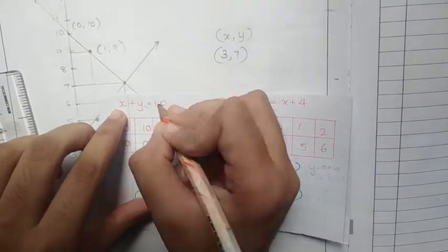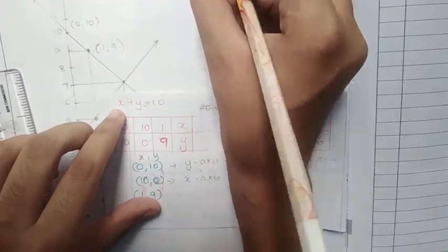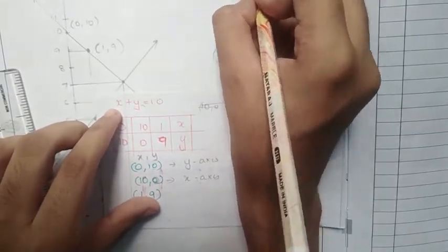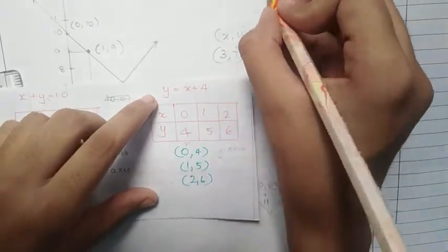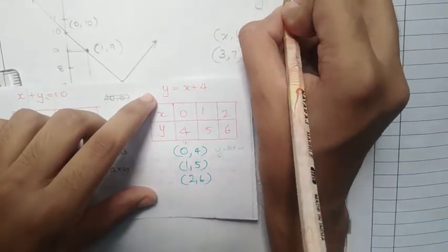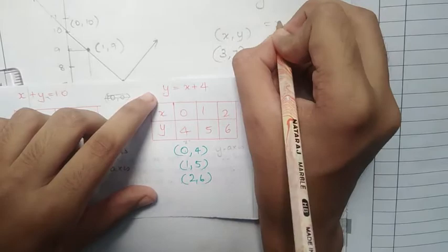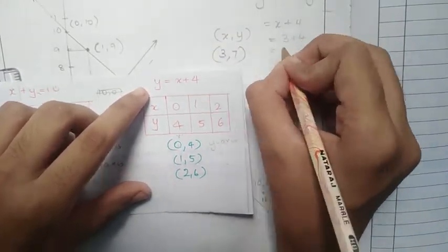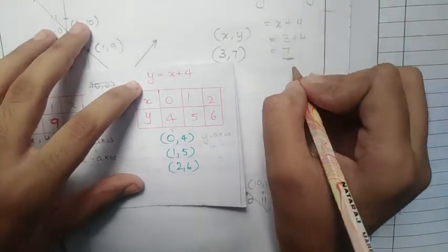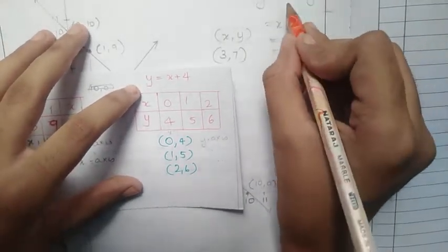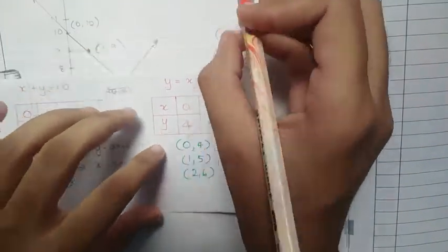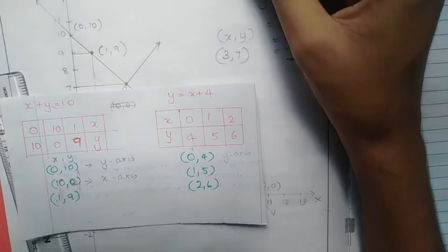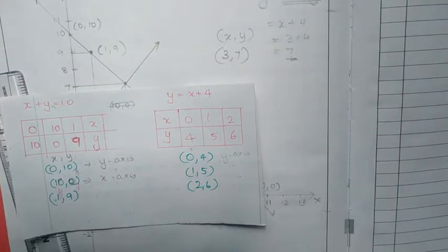Verification: total number of students is 10, so substitute: 3 plus 7 equals 10. Correct. And y equals x plus 4: 3 plus 4 equals 7, and 7 equals 7. Correct. Therefore, the number of girls equals 7 and the number of boys equals 3.